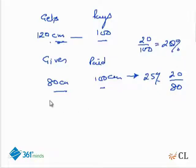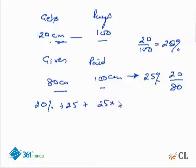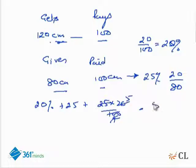So what is his cumulative profit? These are two successive profits: 20 plus 25 plus (25 × 20)/100. He has got a total profit of 50 percent — this is assuming there was no markup from his side.